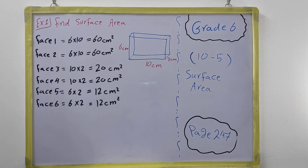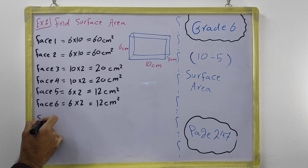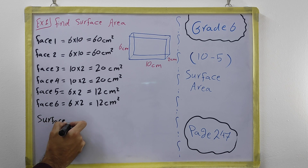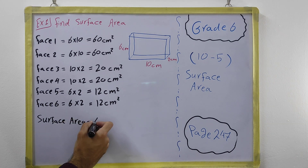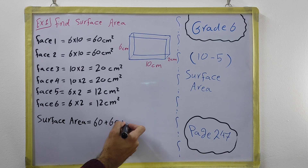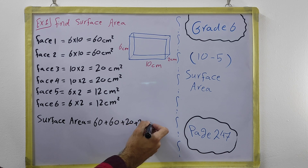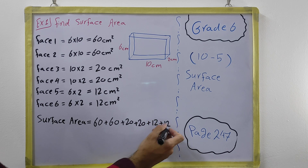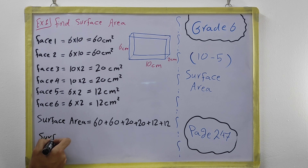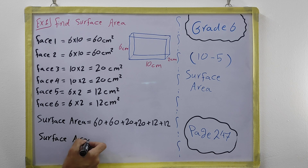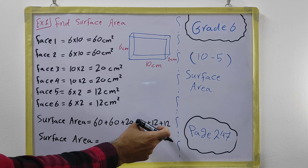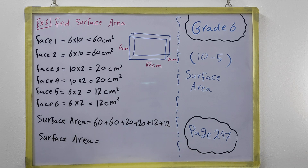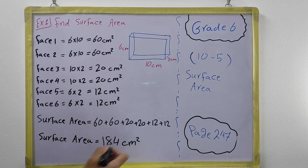At the end, when you have found all of them, surface area equals the addition of all of them: 60 plus 60 plus 20 plus 20 plus 12 plus 12. Adding them up: 120 + 20 = 140, + 20 = 160, + 12 = 172, + 12 = 184. So surface area equals 184 cm².